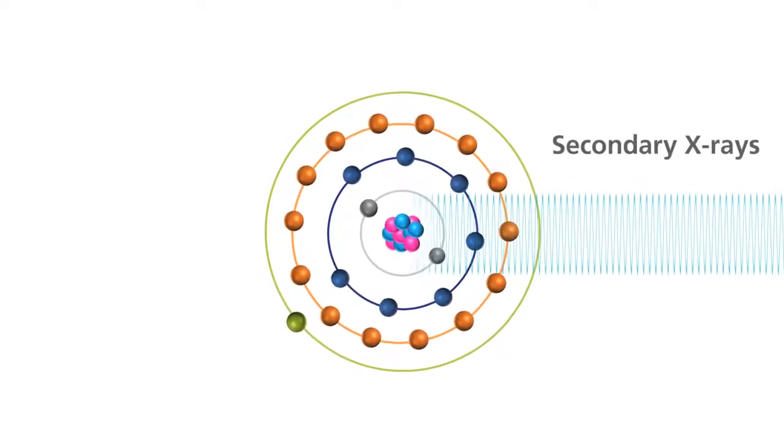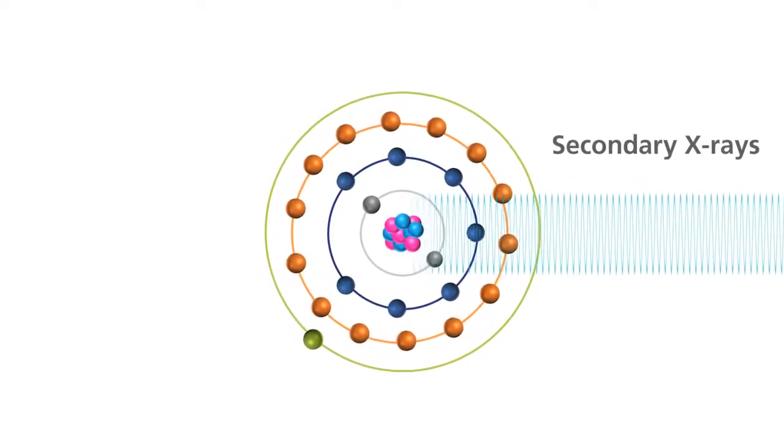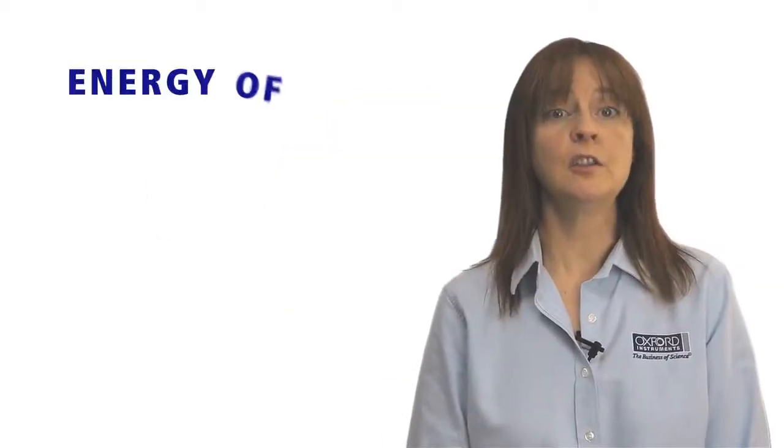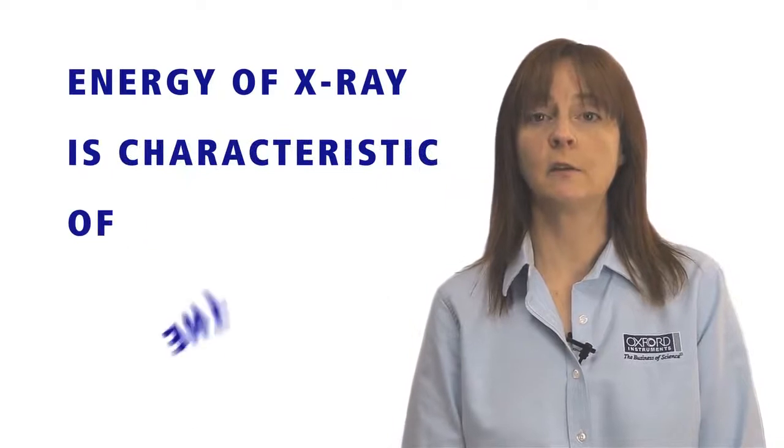The excess energy released as the electron moves between the two levels is emitted in the form of a secondary X-ray. The energy of the emitted X-ray is characteristic of the element.